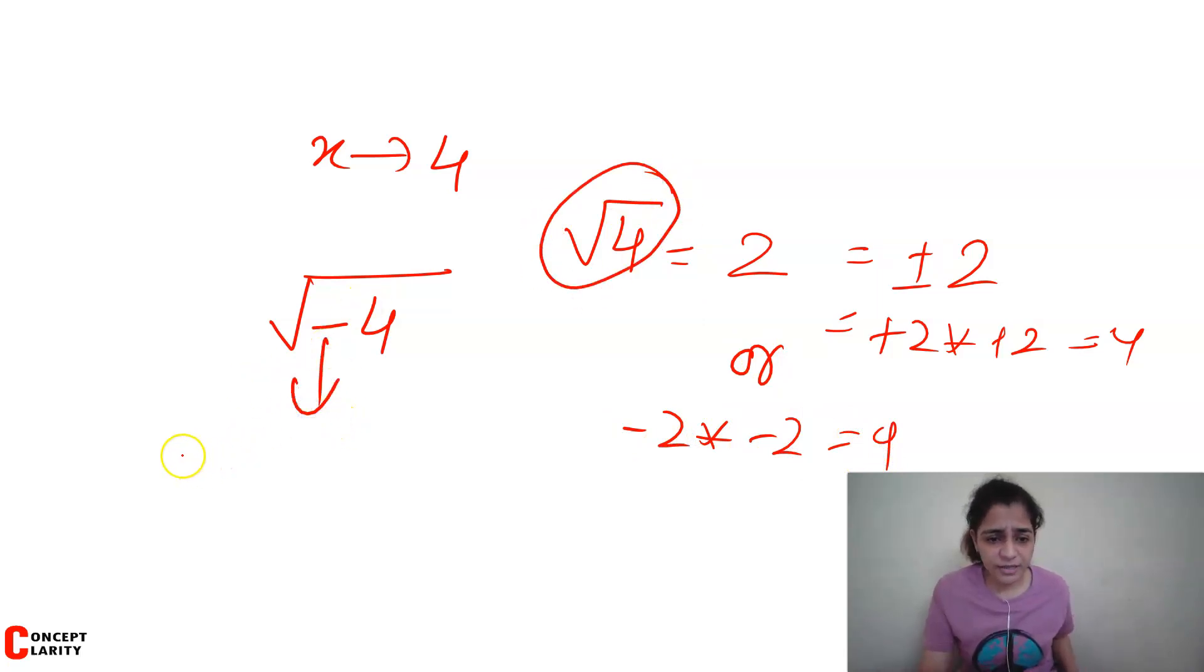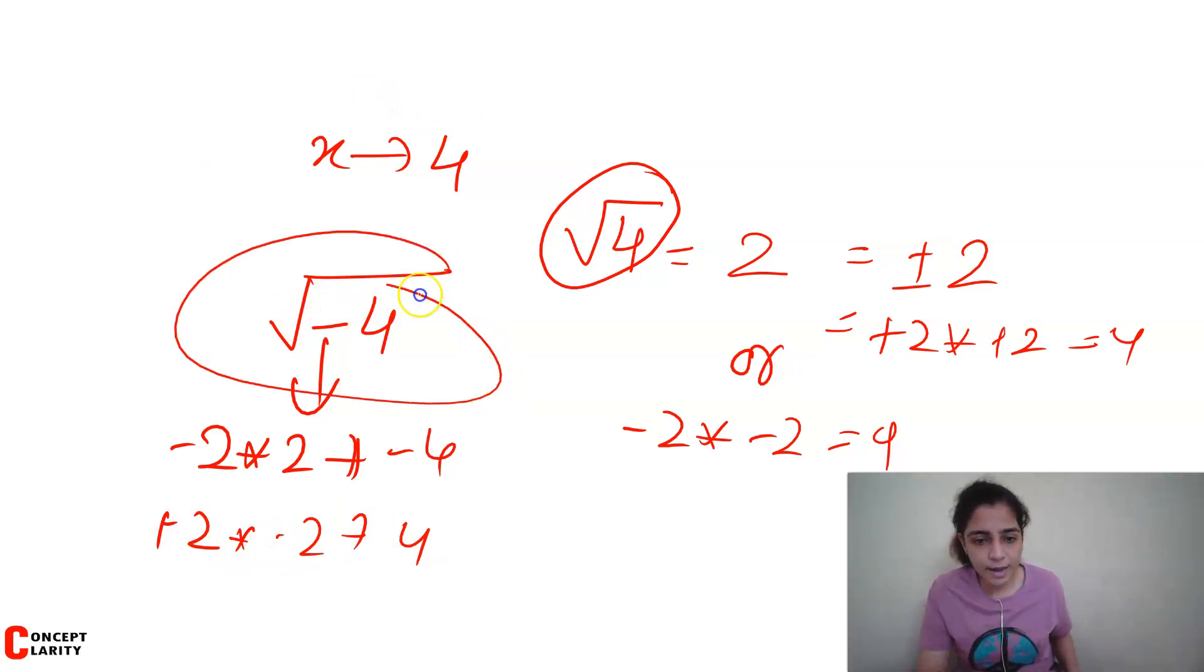But what about minus 4? 2 into 2, minus 2 into 2 gives you minus 4, or minus 2 into minus 2 gives you 4. So we do not know. When we do not know these numbers, we call them imaginary numbers. So the answer is 2i. And i, we denote as under root of minus 1.